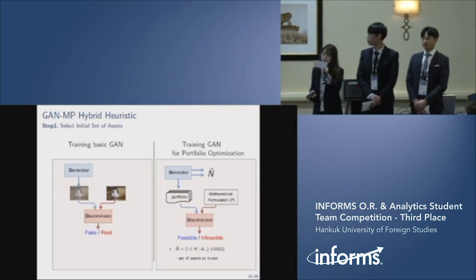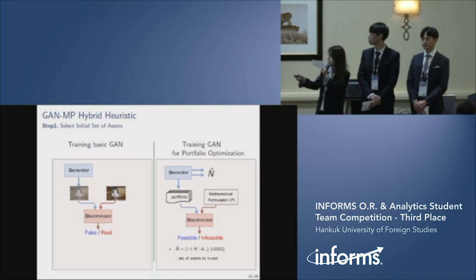To sum up, in general GAN, discriminator checks if the image is real or fake. But in our case, discriminator checks if portfolio is feasible or not. After training, we produce set of assets to invest from the trained generator.